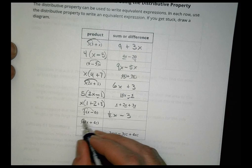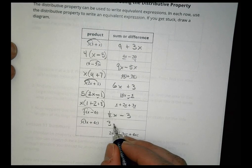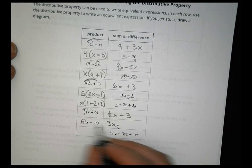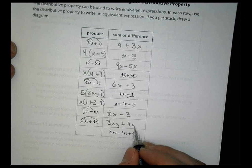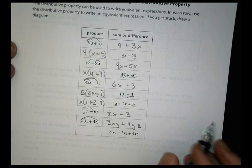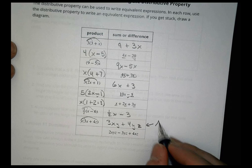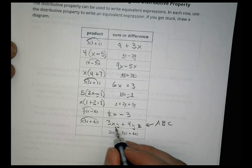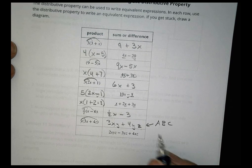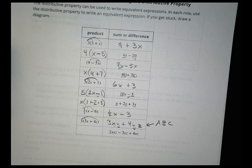Half times x is 1/2 x, and a half times minus 6 is minus 3. Here, y times 3x is 3xy, and y times 4z is 4yz. One thing to note is notice that I tend to go in alphabetical order: x, y, z. When you write your variables, you almost always write them in alphabetical order.